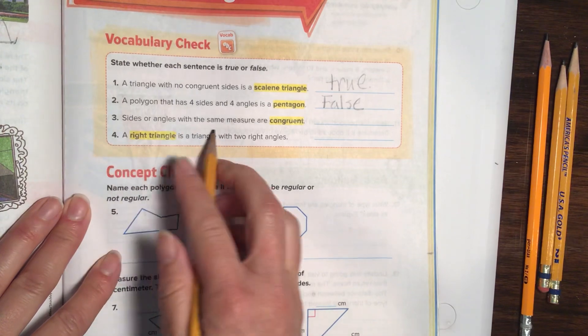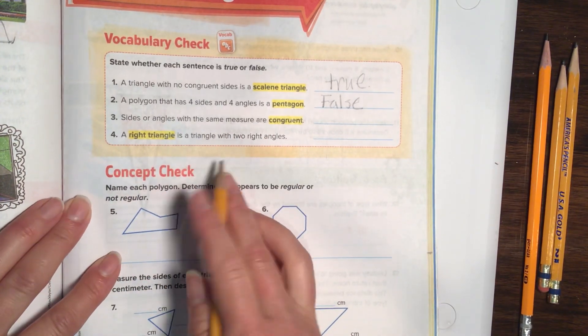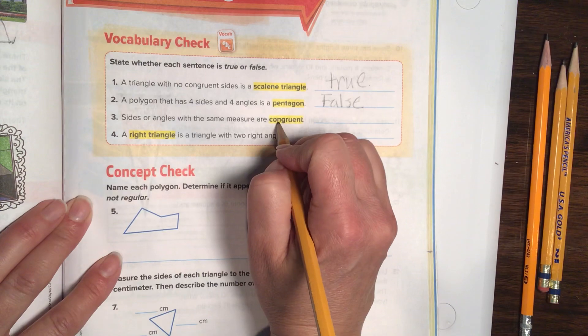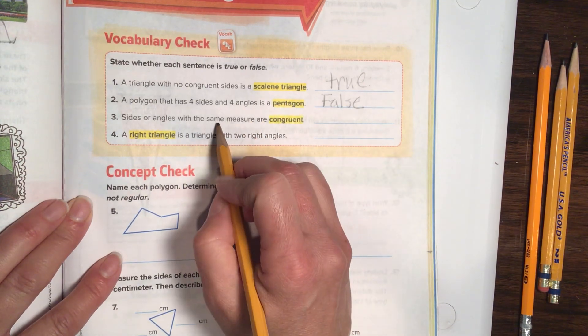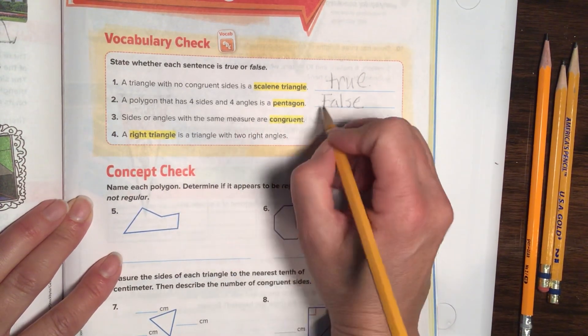Sides or angles with the same measurement are congruent. That is true because that's what congruent means, is the same length or the same measurement would work as well.